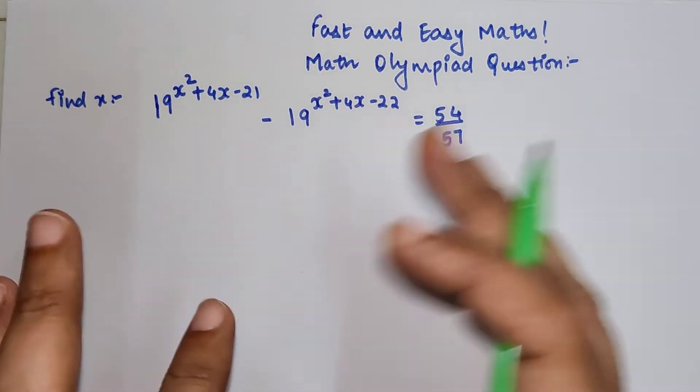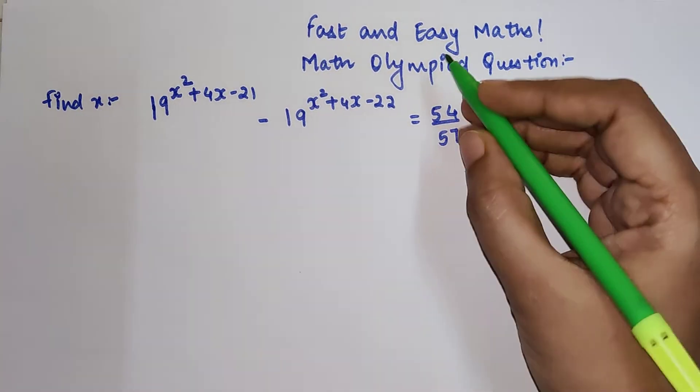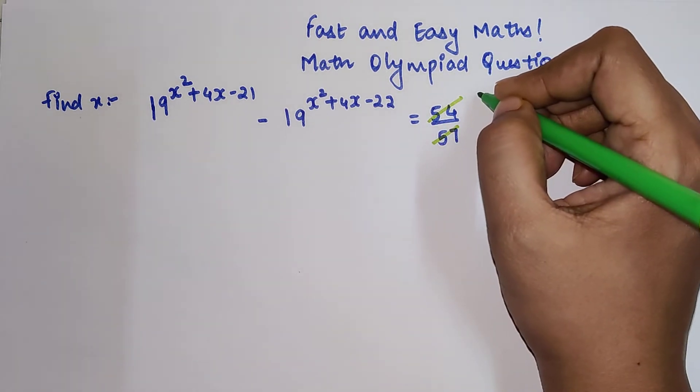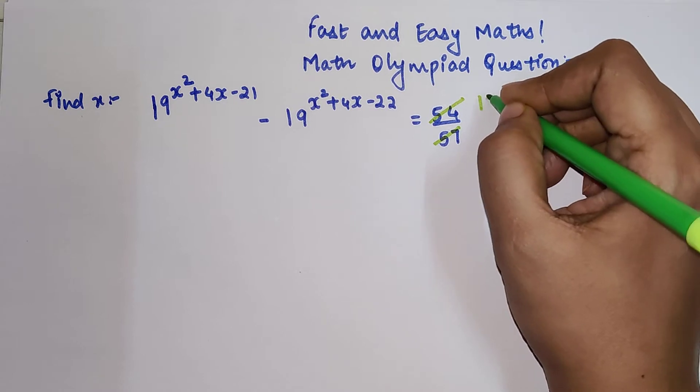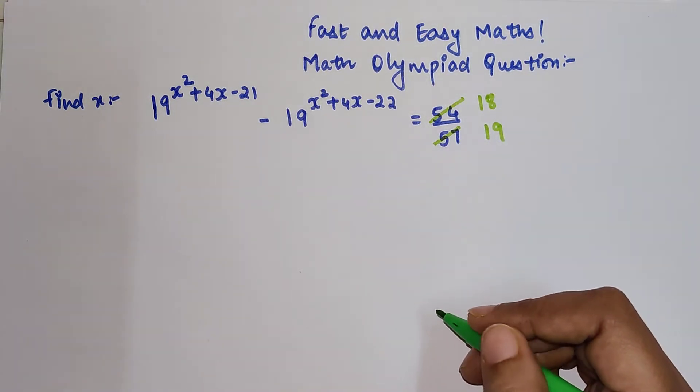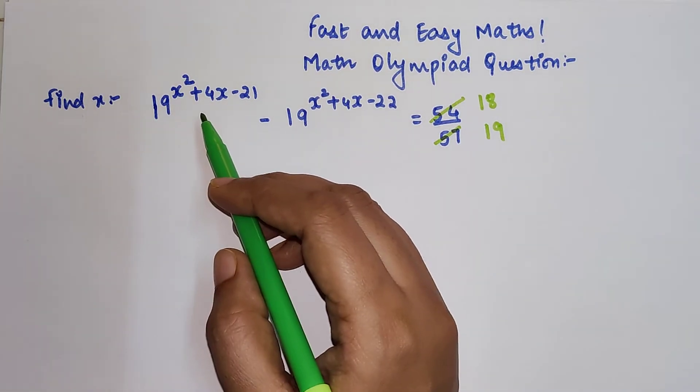Here I can say that both of these numbers are divisible by 3. So when I cancel them, I get 18 and 19. Now, we know that x²+4x-21 can be written in terms of -22.